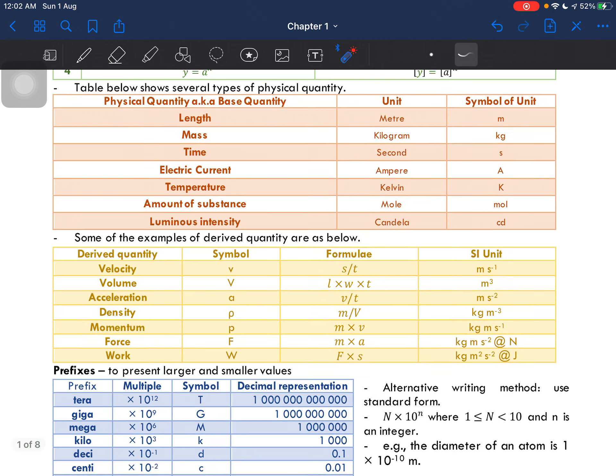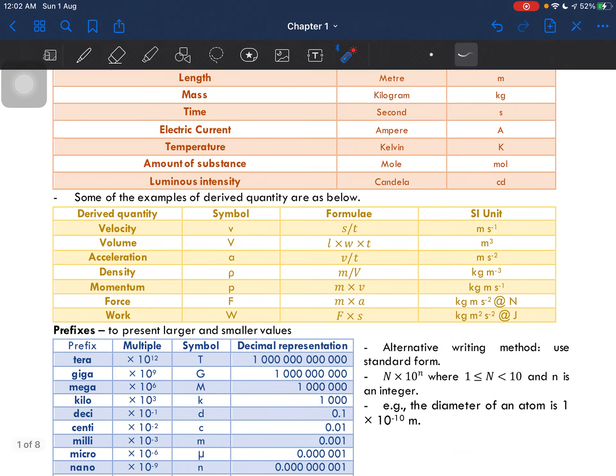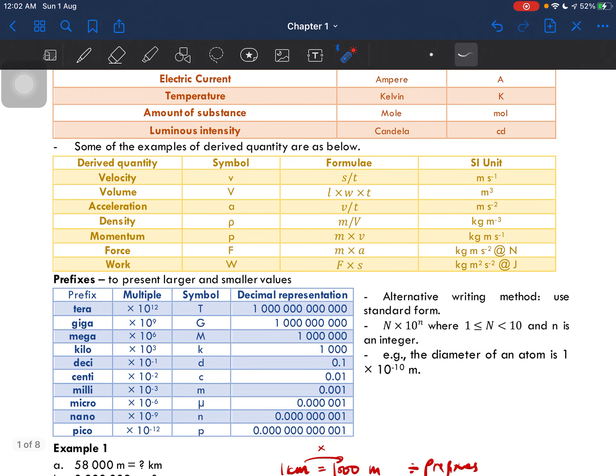So for this one, this table shows some of the types of physical quantities along with their SI unit and the symbol of the unit.